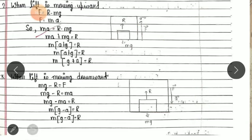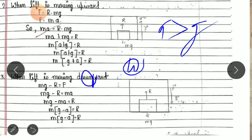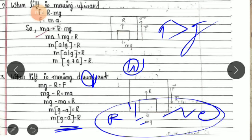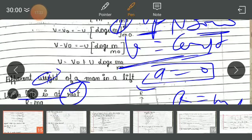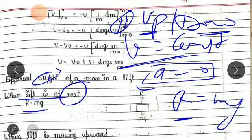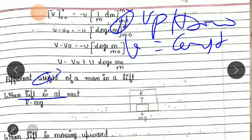Special case: if acceleration equals g, then R equals zero - this is weightlessness or free fall condition. If acceleration is greater than g, then R becomes negative, which is practically not possible, so this situation will not arise. This completes the third unit. Apparent weight in a lift is very important and frequently asked.